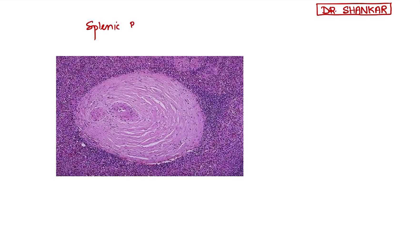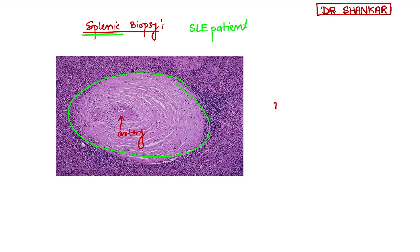Next, coming to another image — this is a splenic biopsy. This specimen is taken after autopsy from a patient with SLE. The SLE patient's spleen biopsy is showing onion skin fibrosis around the artery. This is periarterial fibrosis, which is suggestive of SLE. This periarterial fibrosis occurs because of vasculitis associated with rheumatic disorders like SLE.